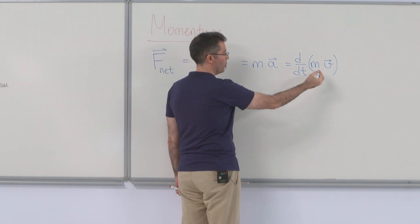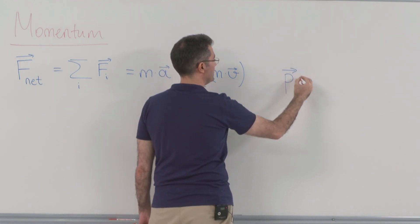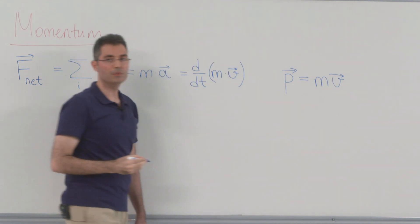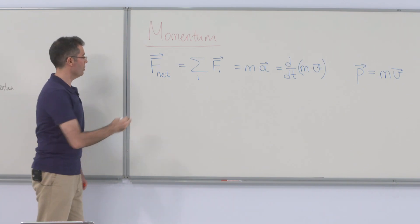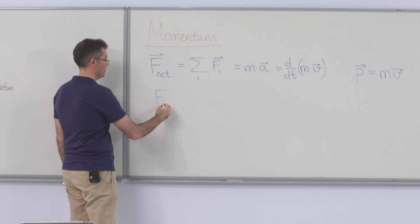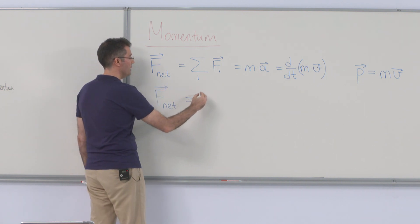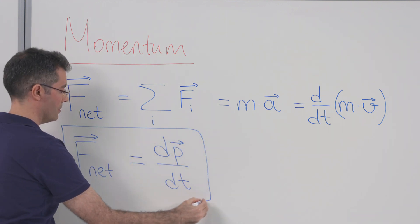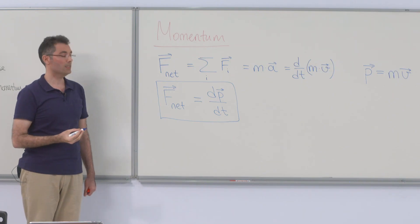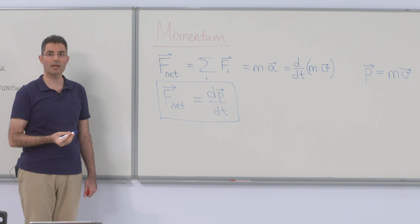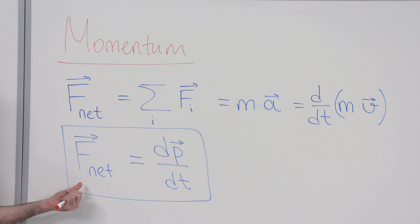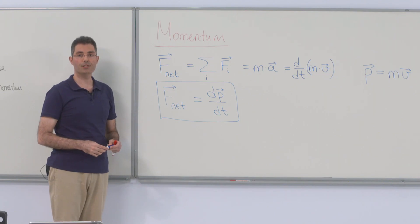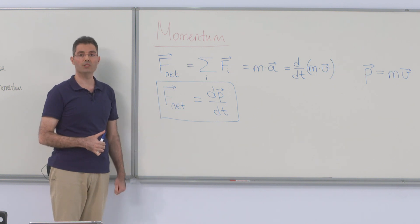We define the momentum of a particle as equal to its mass times its velocity. Newton's second law can then be rewritten as the force being equal to the rate of change of momentum. This form is more general because it also applies to cases where the mass is changing. Therefore, the force can be interpreted as the instantaneous rate of change of momentum. When the total force on a particle is zero, the rate of change of momentum is zero and the momentum of the particle is constant.